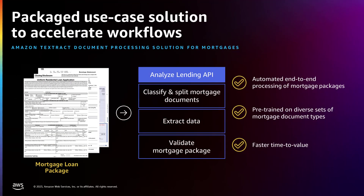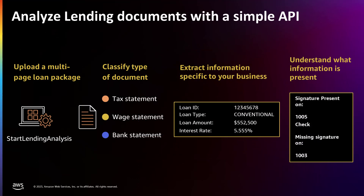So we're excited to share that we launched a new API called Analyze Lending from Amazon Textract. This helps with mortgage document processing. The Analyze Lending API enables you to accelerate your mortgage document processing workflow with AI/ML technologies. It is a specialized mortgage document processing API that automates the classification and extraction of information from a range of mortgage-related application documents by classifying the mortgage documents and orchestrating them to the appropriate machine learning models for data extraction. These models have been pre-trained across the diversity of document types seen in a typical mortgage application package, such as W-2s, payslips, Form 1003s, and more.